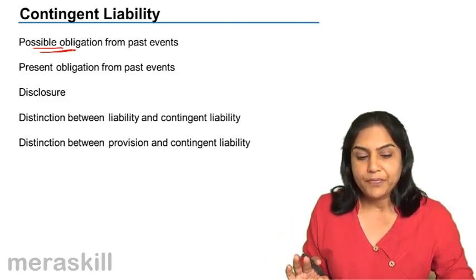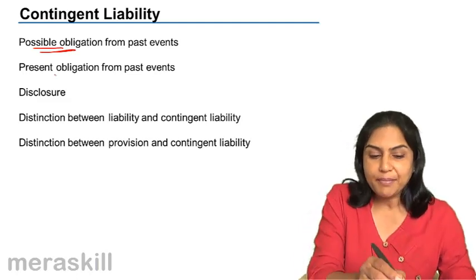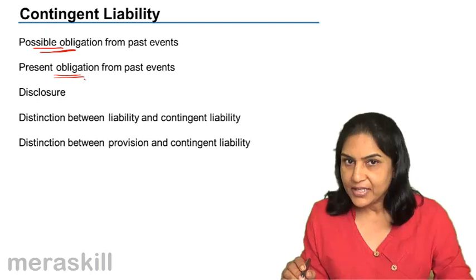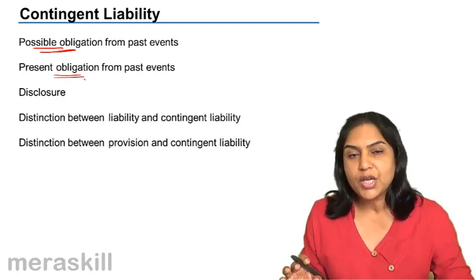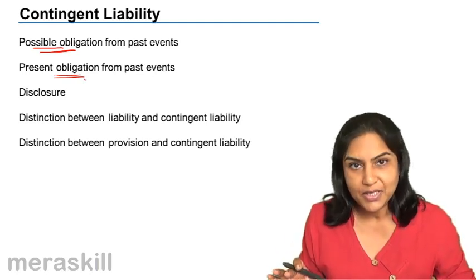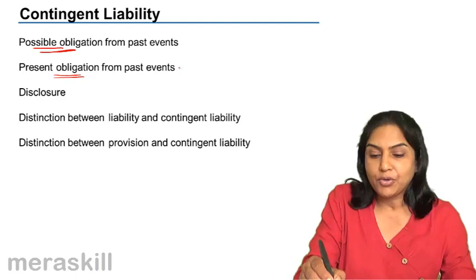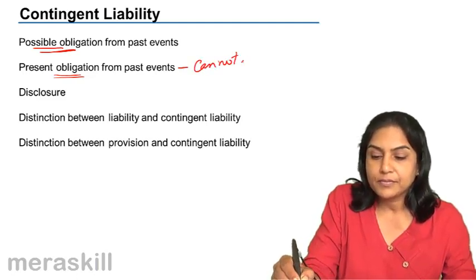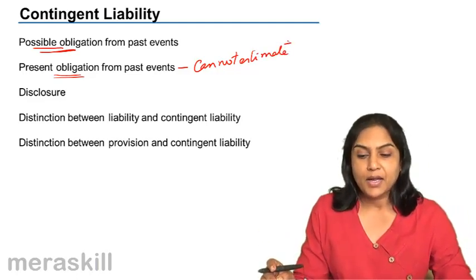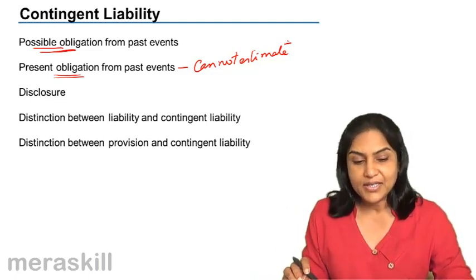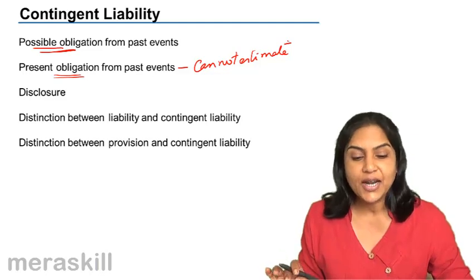It could also be a present obligation from past events, but the amount is absolutely not possible for us to estimate. If we cannot estimate the amount involved with any reasonableness, then we also call that a contingent liability.